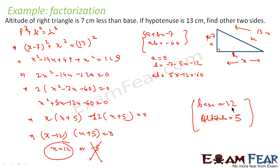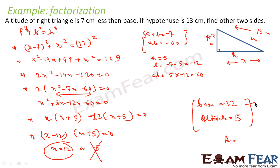So that is my answer. I assumed the base to be x, altitude came out to be x minus 7 as given in the question. Using the Pythagoras theorem I got the quadratic equation, and using the factorization method I got x equals 12 and minus 5. Since minus 5 is negative and length can't be negative, I ignored it, taking x equals 12: base equals 12, altitude equals x minus 7 equals 5.